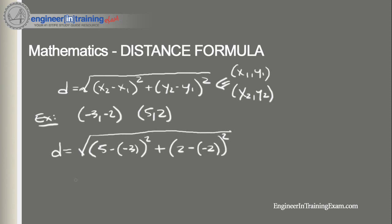So working that out we get the square root of 8 squared plus 4 squared which comes down to the square root of 80. And just throwing that into our calculator real quick we find that the distance between these two given points is 8.94.